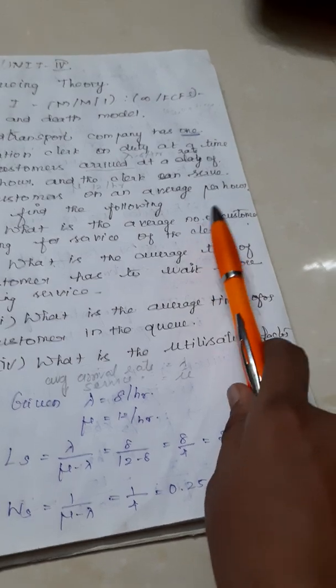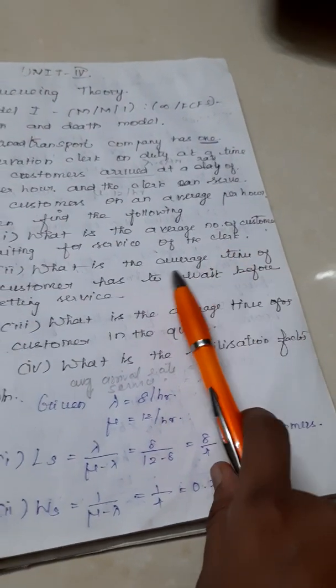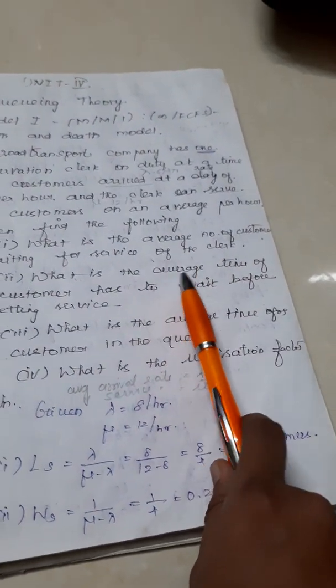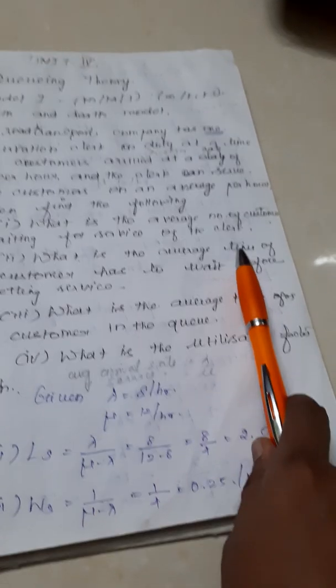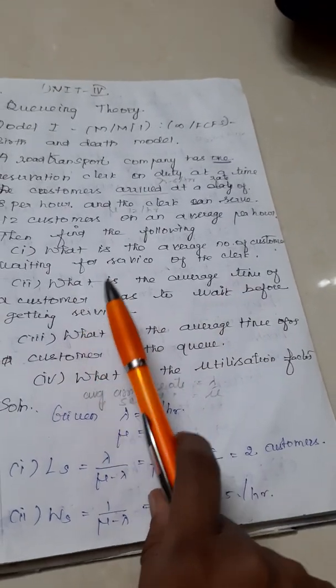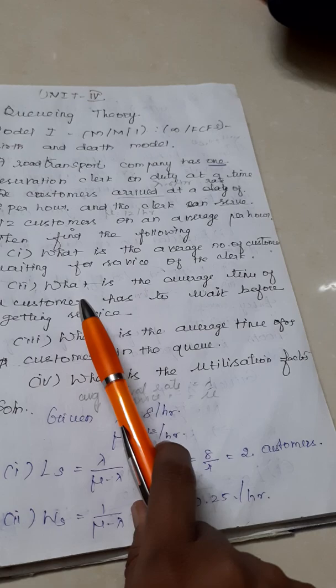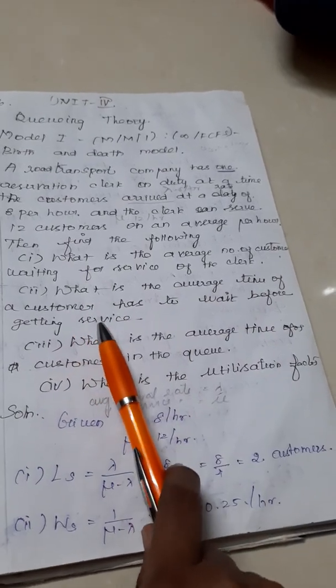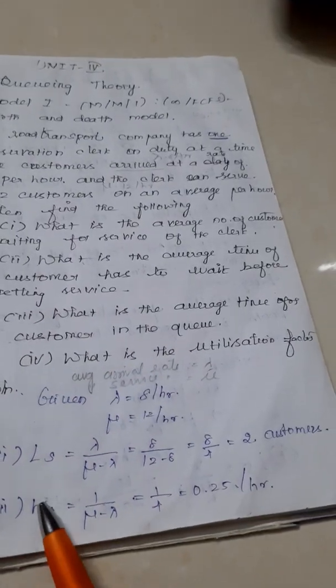Average time means waiting time. Number of customers means L notation. Waiting time means the notation is W. So here the waiting time for a customer including the person in the service counter, we call it as Ws.